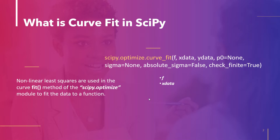The parameter f is the model function. The independent variable must be the first argument and the subsequent arguments must be the fitting parameters separately. ydata is a length-m array with nominally the dependent data. p0 is the initial guess for the parameters; if not known, all starting values will be 1. sigma determines the ydata level of uncertainty. absolute_sigma: if true, the computed parameter covariance pcov represents the absolute values of sigma in its application.